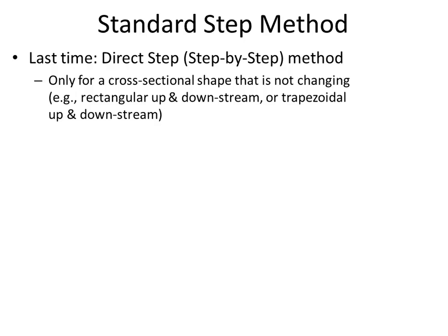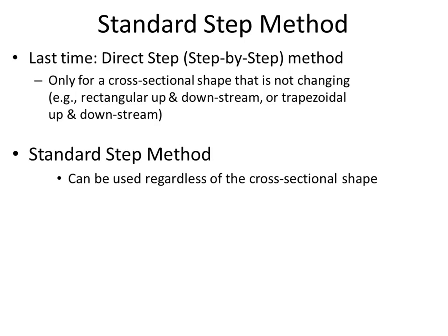In the last lecture, when we learned the direct step method, we realized that it's only for a channel where the cross-sectional shape isn't changing. It has to be both rectangular upstream and downstream, or trapezoidal upstream and downstream — the shape and width must be constant at each section. In other cases, we need a different method because the channel geometry is changing in the direction of flow.